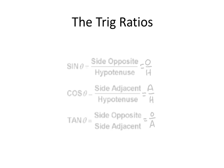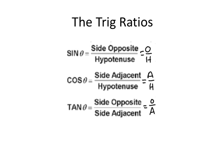The trig ratios are: sine theta equals the side opposite over the hypotenuse, which is O over H. Cosine theta equals the side adjacent over the hypotenuse, which is A over H. Tangent theta equals the side opposite over the side adjacent, which is O over A. These ratios can be confusing, so the best way to understand them is to dive into examples.